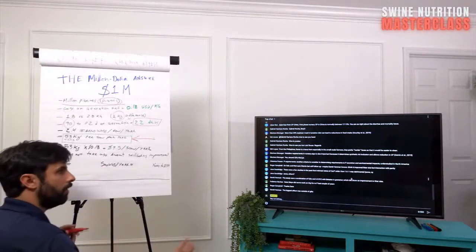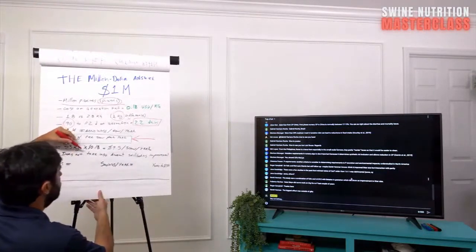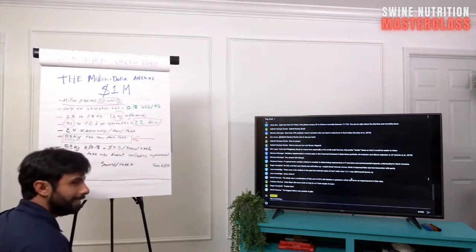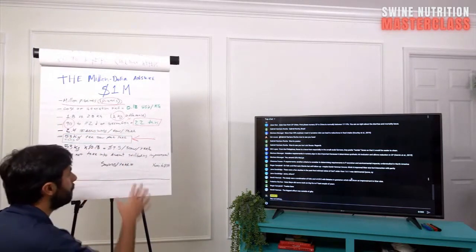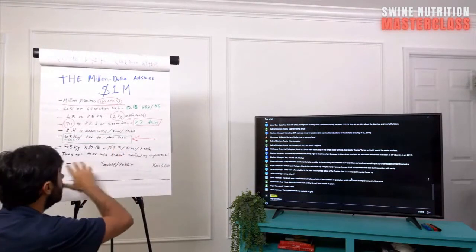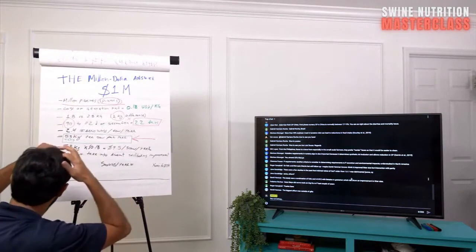And it does not take into account stillborns improvement. This math. Because 1% stillborn improvement would be about $10 per sow per year. So that's virtually going to double this number. We're really looking at the simple scenario.